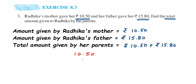This is called lining up the decimal, where you line up the decimal points and write the numbers. On the left side we have 15, so it's 5 and 1. Now do the addition: 0 plus 0 is 0, 5 plus 8 is 13, carry 1, put the decimal point here, 5 plus 1 is 6, and 1 plus 1 is 2. So the answer is 26.30.